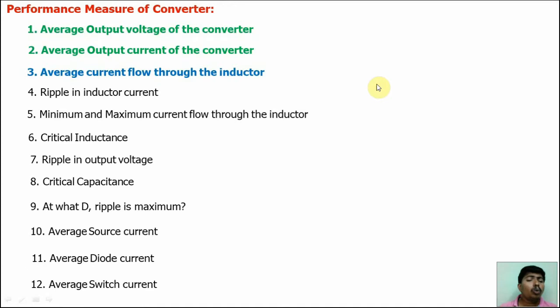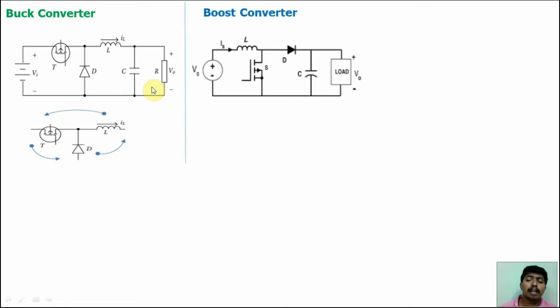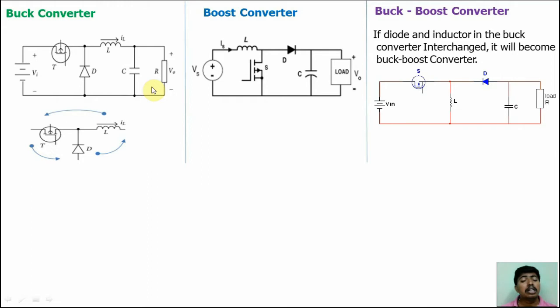We already discussed how to calculate the average output voltage for the buck, boost, and buck-boost converters. In this video, we will discuss the average current flow through the inductor for these converters. These are the performance measures for the buck, boost, and buck-boost converters or choppers. You should know the circuit diagrams for the buck, boost, and buck-boost converters — refer the average output calculations video linked in the description box.